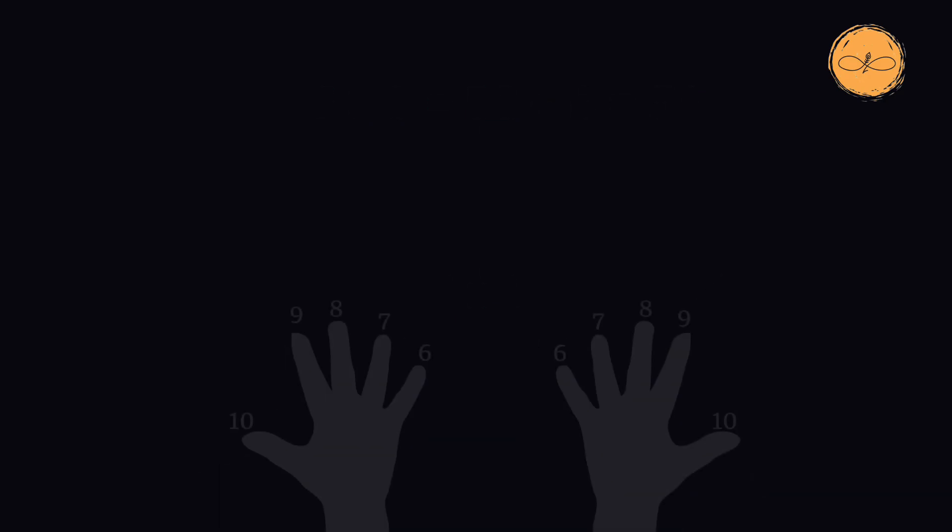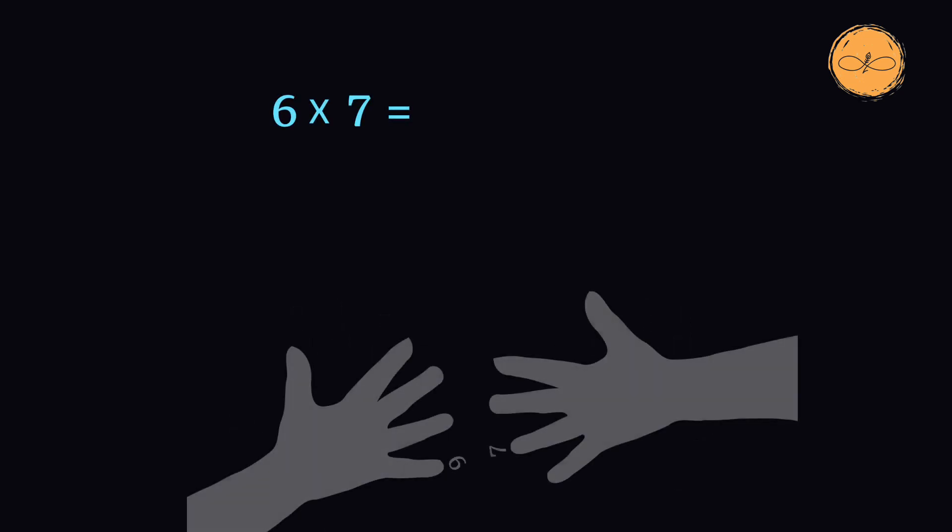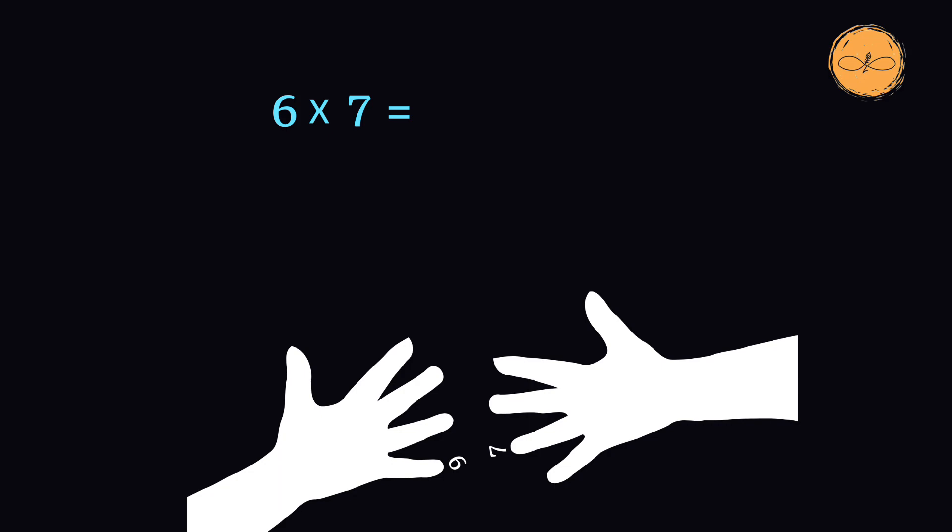This procedure always works for the numbers 6 through 10. Let's do a final example of 6 times 7. We'll rotate our left hand so we have the finger 6 and rotate our right hand to the 7. Now we count the number of fingers that are below. We have 1 on the left hand and 2 on the right hand, which makes for 3, or 30.